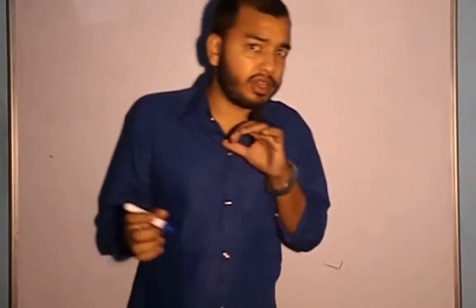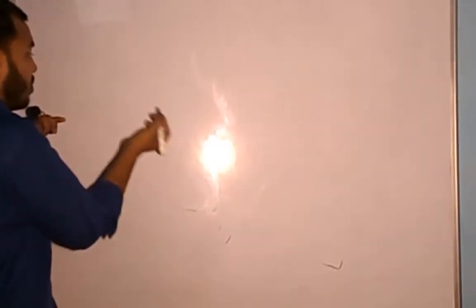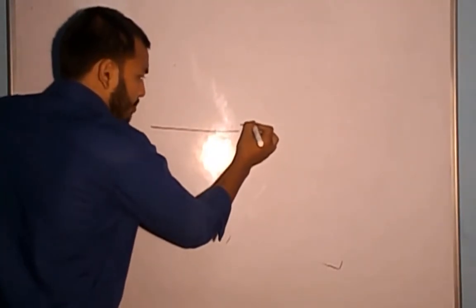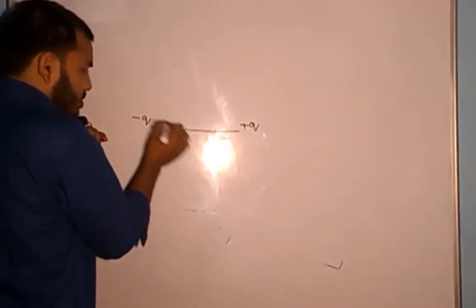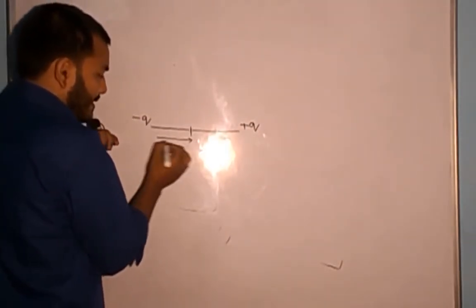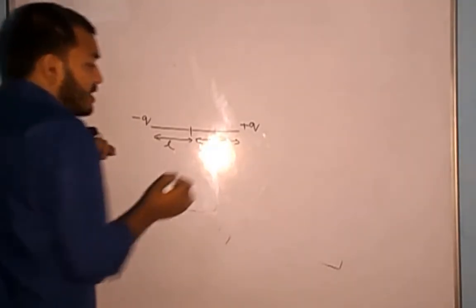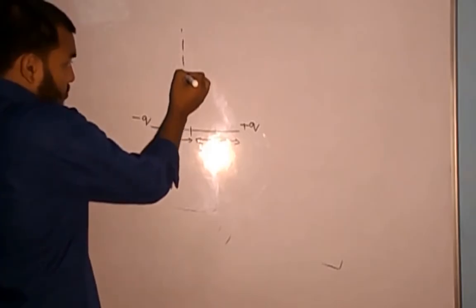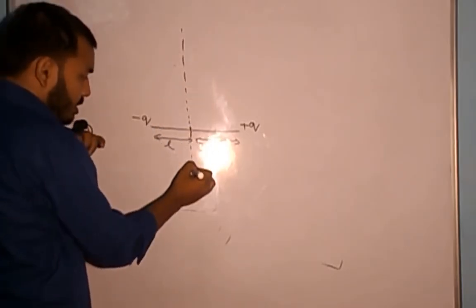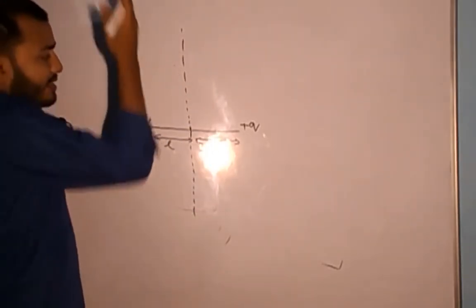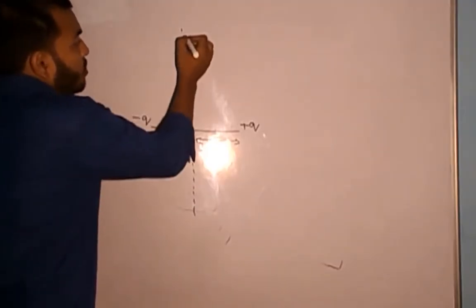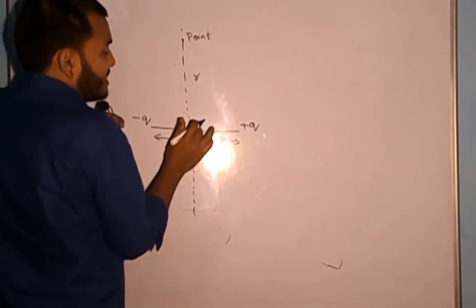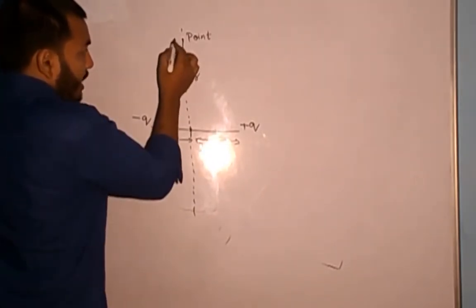Hello students, today we will calculate the electric field at the equatorial position of a dipole. A dipole consists of equal and opposite charges separated by a small distance. I take each half-distance as L, so the full separation is 2L. The equatorial position is the perpendicular bisector line, and I take a point on this line at a distance R from the center of the dipole.